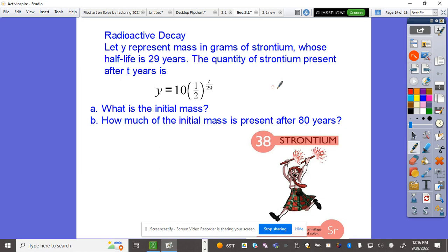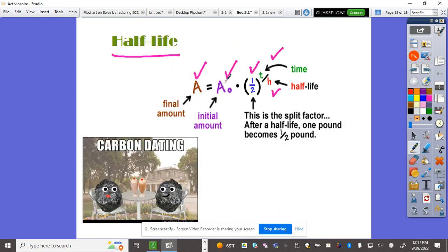Radioactive decay: Let Y represent the mass in grams of strontium, whose half-life is 29 years. This chemical gets cut in half every 29 years. The quantity present after T years is Y = 10(1/2)^(T/29). Y is the final amount, 10 is the initial mass, one-half is the formula for half-life, and 29 years is when it gets less by half.